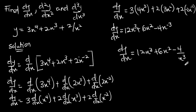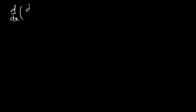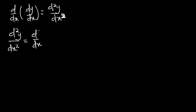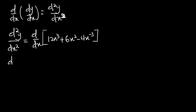Now let's find d²y/dx². The second derivative is d/dx of the first derivative dy/dx, and that gives us d²y/dx². So our d²y/dx² is equal to d/dx of the function we obtained: 12x³ + 6x² − 4x^(−3).